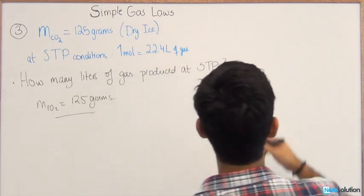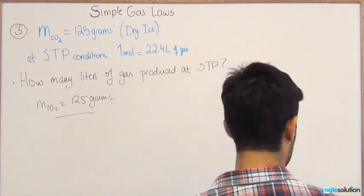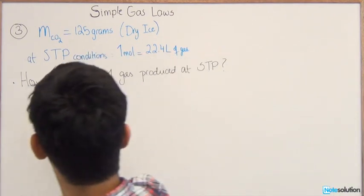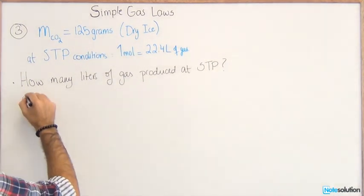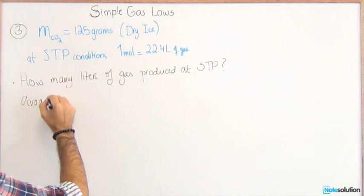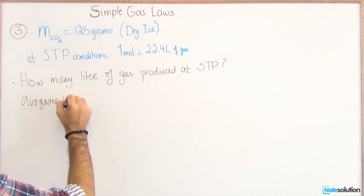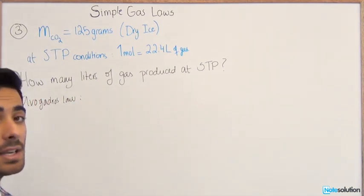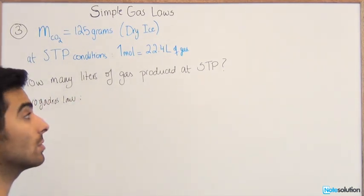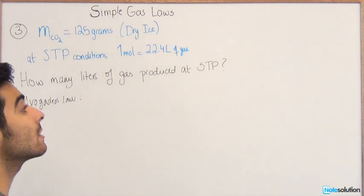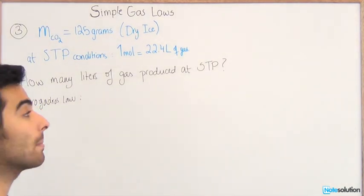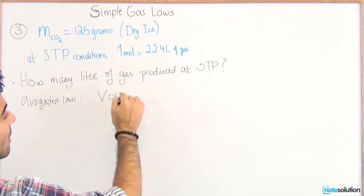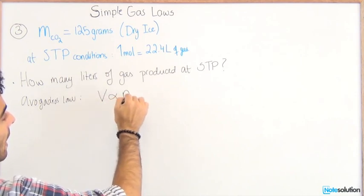Avogadro's law states that volume is directly proportional to amount of gas present at constant temperature and pressure. V is directly proportional to N.